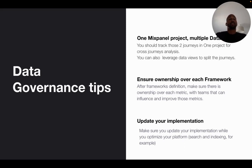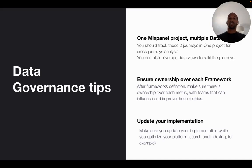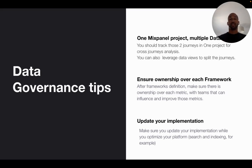Another tip is to define ownership of each metric in your framework — ownership for your reach metric, activation, engagement, and retention. A best practice is to assign ownership to a team that can actually influence and improve that metric, because they'll make sure the implementation is correct, define the goals related to those metrics, and ensure that everybody is aligned on those metrics and the related tracking.